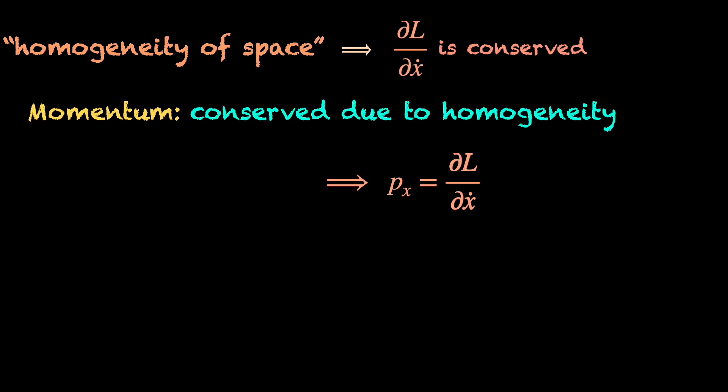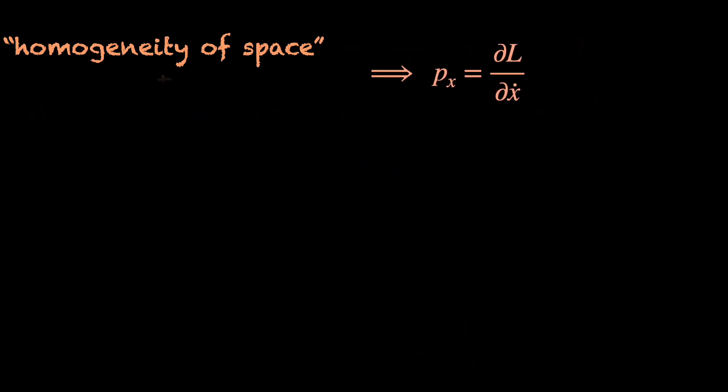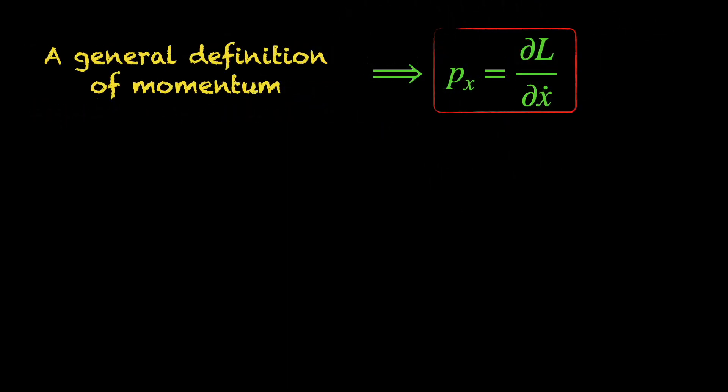For the y and z components, extending the definition is trivial. Thus, using the symmetry statement and the equation of motion, we have got ourselves a general definition of momentum of a system in terms of its Lagrangian.